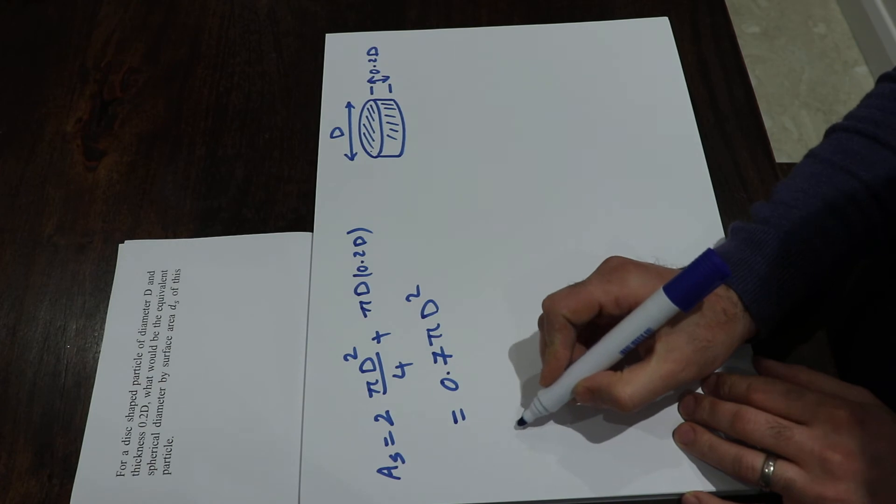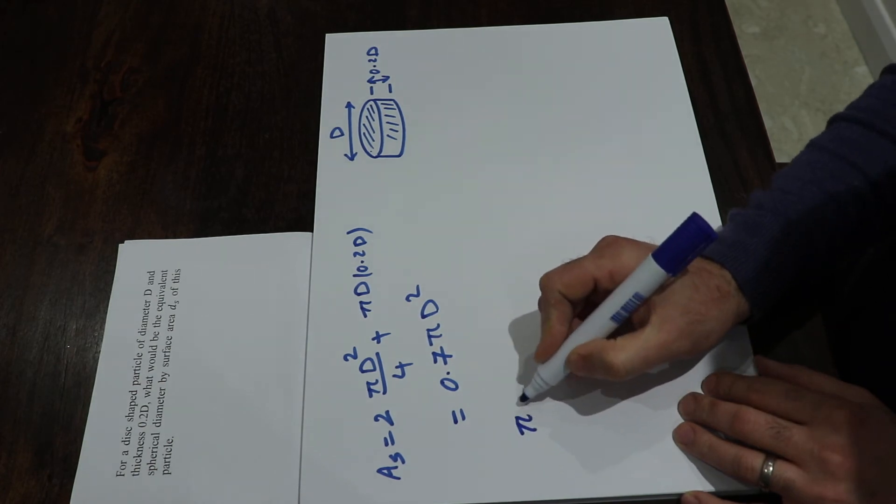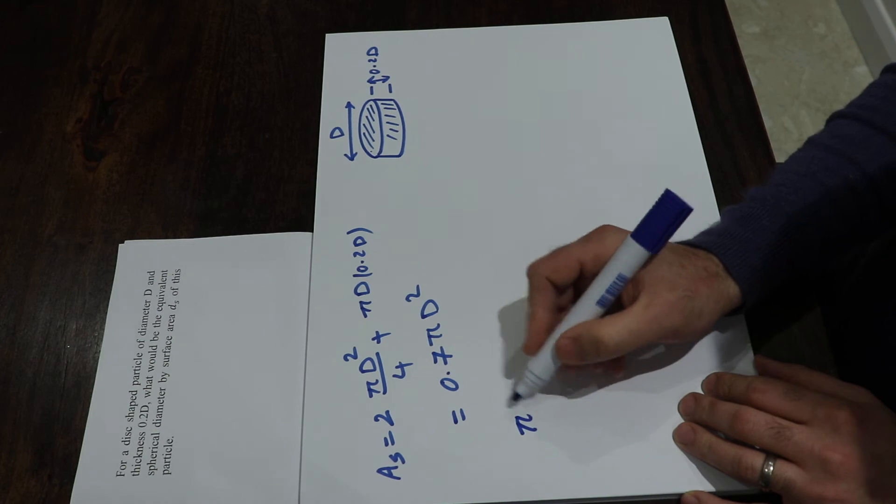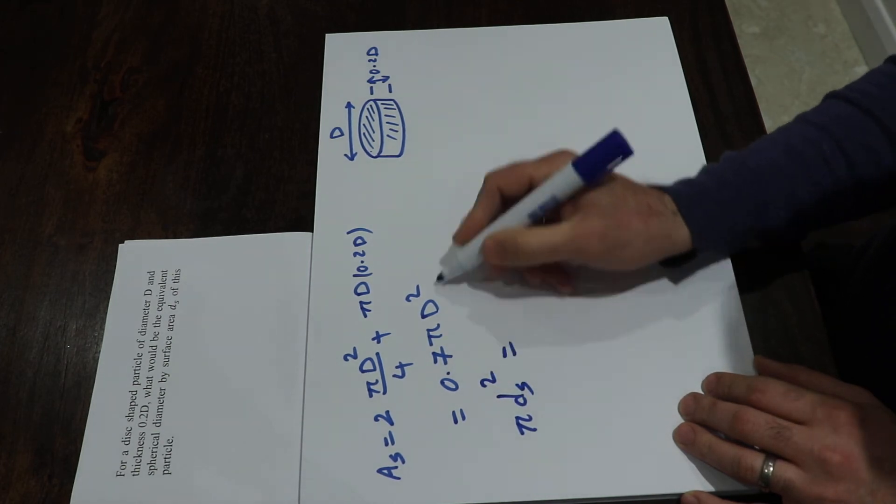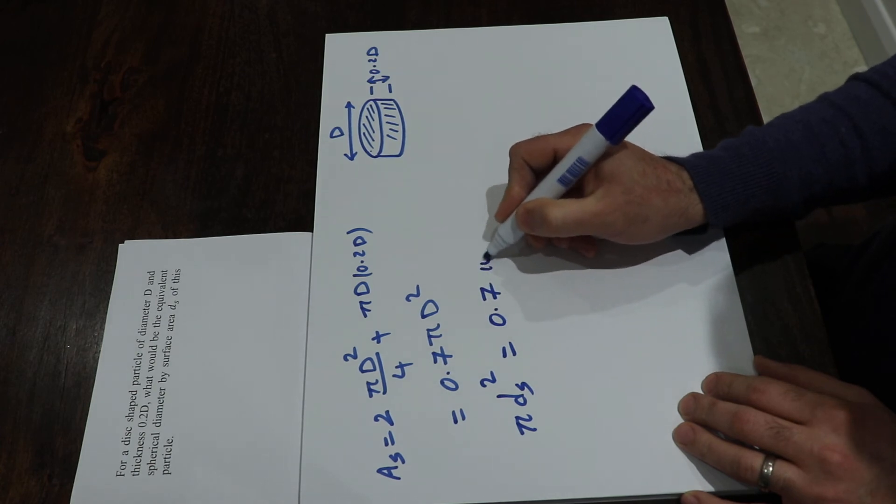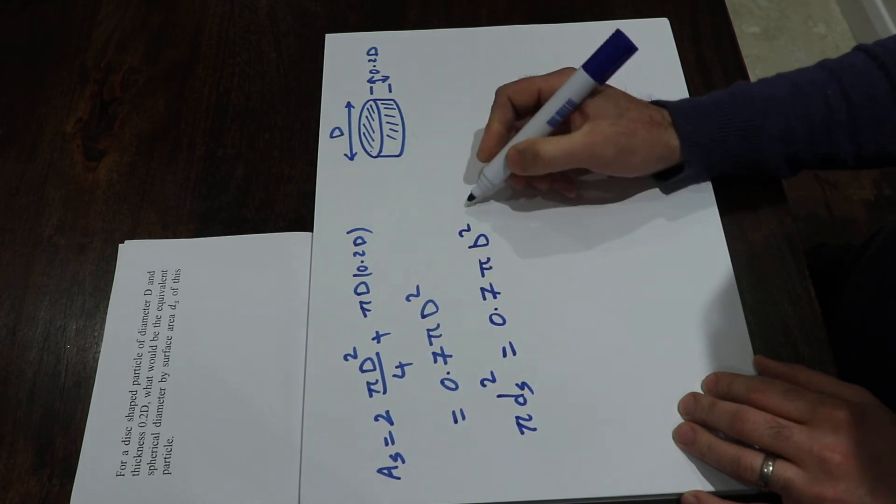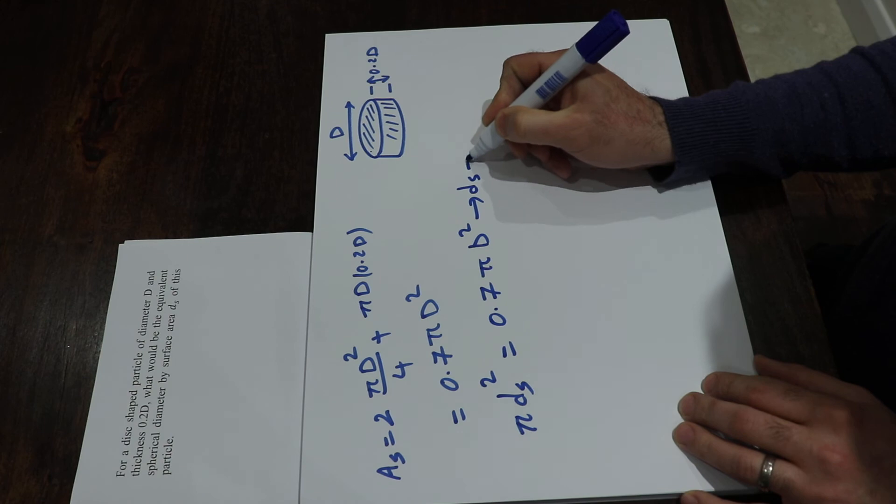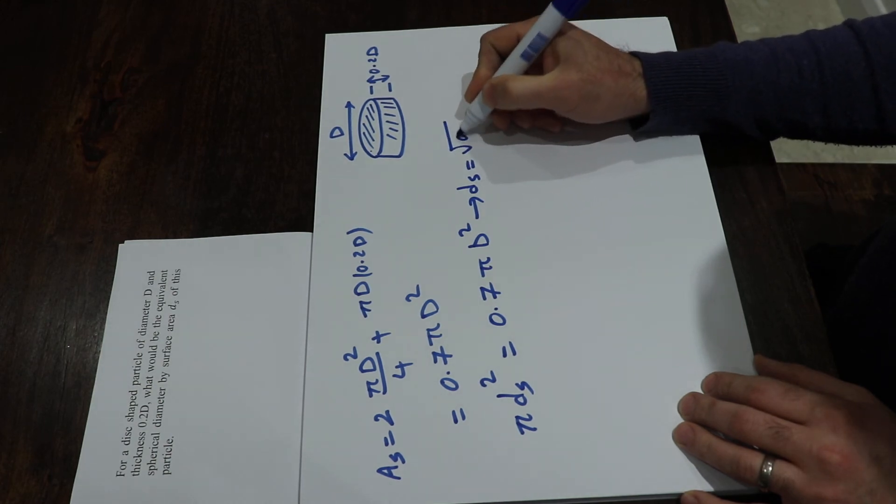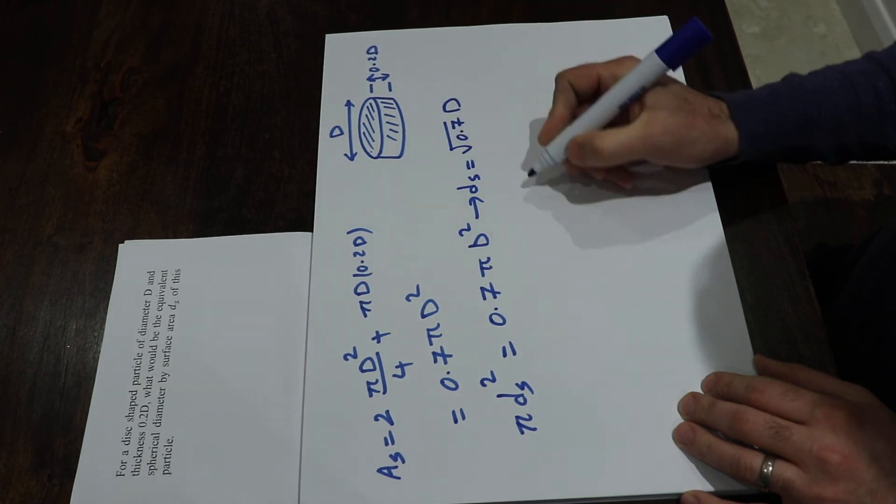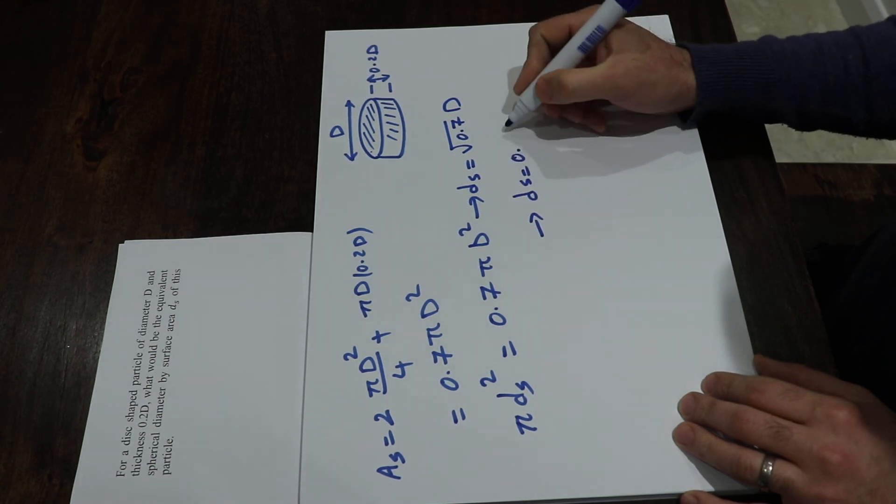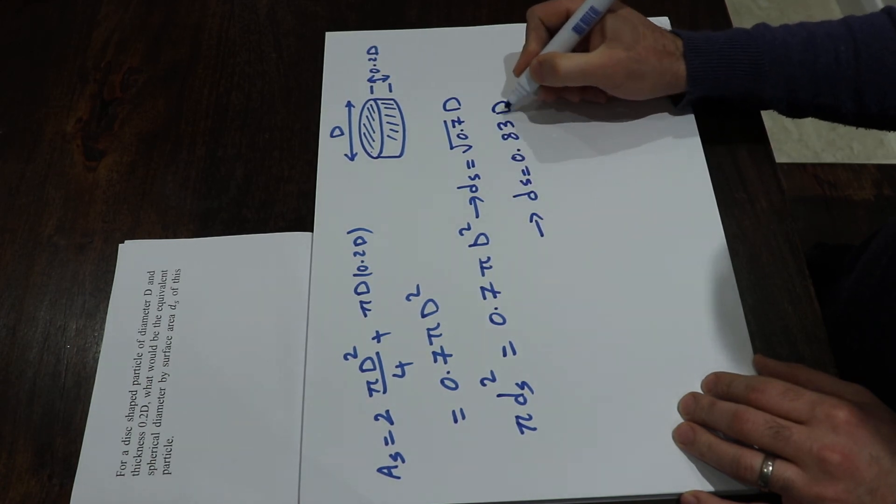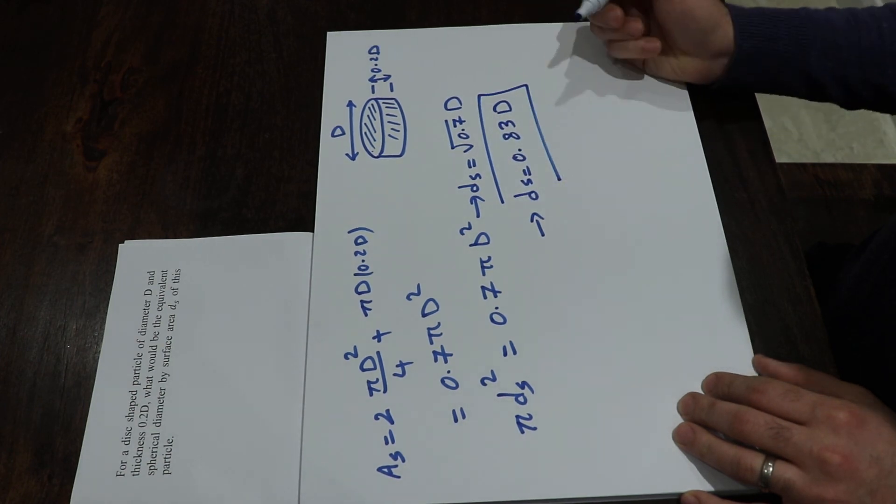That is the surface area of a sphere with the diameter of ds will be equal to pi ds to the power of two, that should be equal to 0.7 pi d to the power of two. Therefore ds will be equal to square root of 0.7 times d, which is equal to 0.83 times d, and that's the solution to this question.